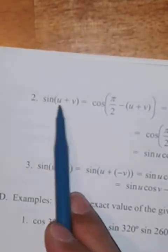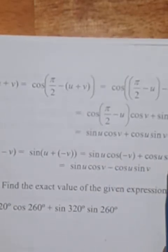Using co-function identities, cosine(pi over 2 minus u) is just sine u, and sine(pi over 2 minus u) is just cosine u. So sine of (u plus v) equals sine u cosine v plus cosine u sine v. To find sine of (u minus v), we rewrite it as sine of (u plus negative v), apply the formula, and use the even/odd properties to get: sine of (u minus v) equals sine u cosine v minus cosine u sine v.